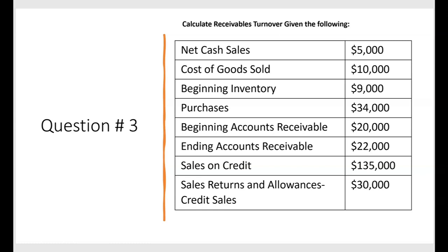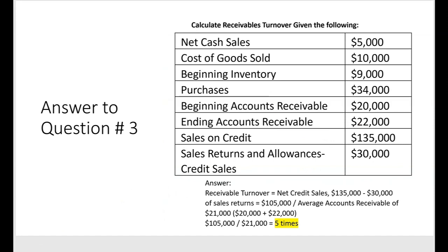Receivables turnover is net credit sales divided by average accounts receivable — beginning plus ending receivable divided by two. You'll see net cash sales — ignore that. You'll see cost of goods sold — that's a distractor. You'll see beginning inventory and purchases — irrelevant. We want net credit sales: 135,000 minus sales returns and allowances of 30,000 gives net credit sales of 105,000. Divide by average accounts receivable of 21,000, and the receivables turnover is five times.